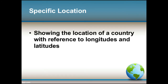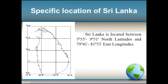Showing the location of a country with reference to longitudes and latitudes is called the specific location. The given map shows the northern latitudes and the eastern longitudes. Accordingly, it is clear that Sri Lanka is located between 5 degrees 55 minutes and 9 degrees 51 minutes north latitudes, and 79 degrees 41 minutes and 81 degrees 53 minutes east longitudes.